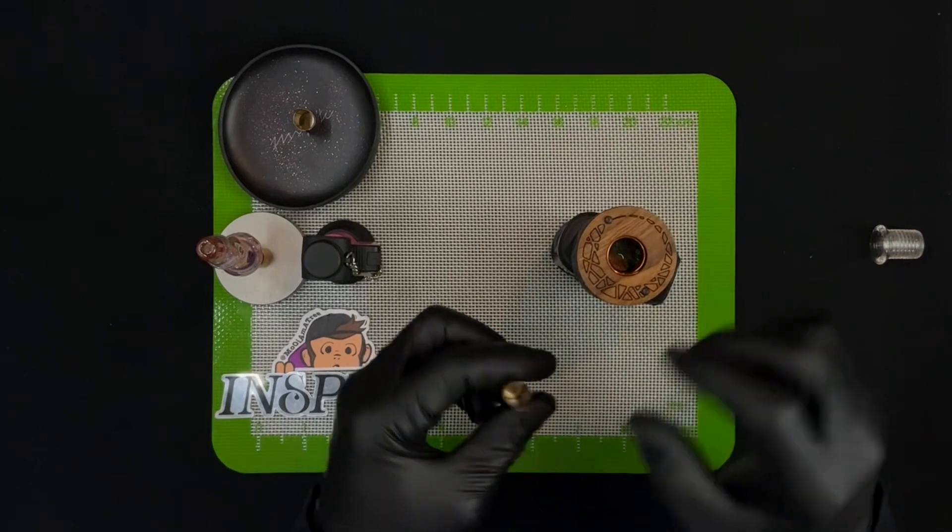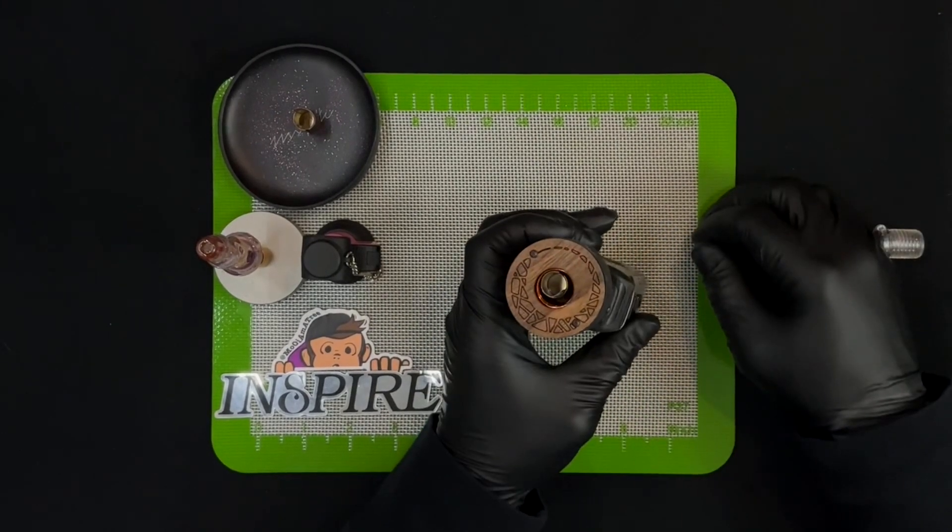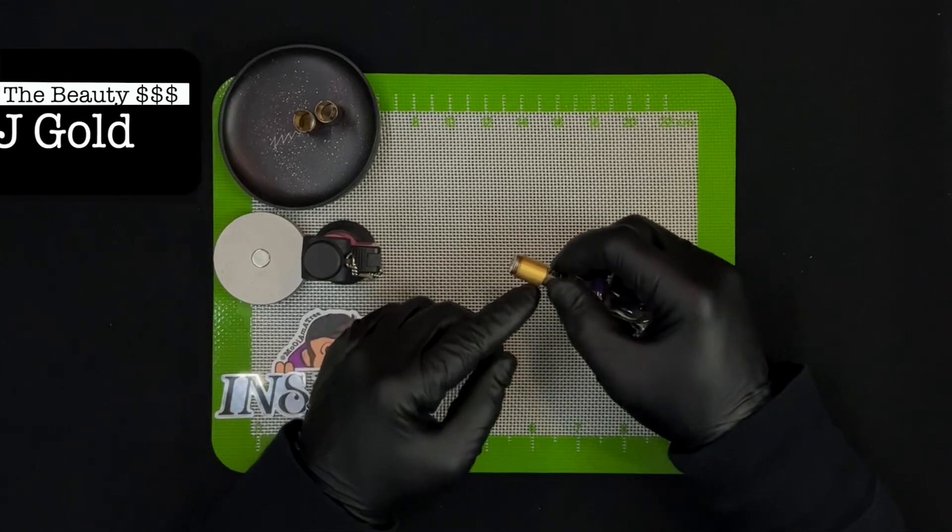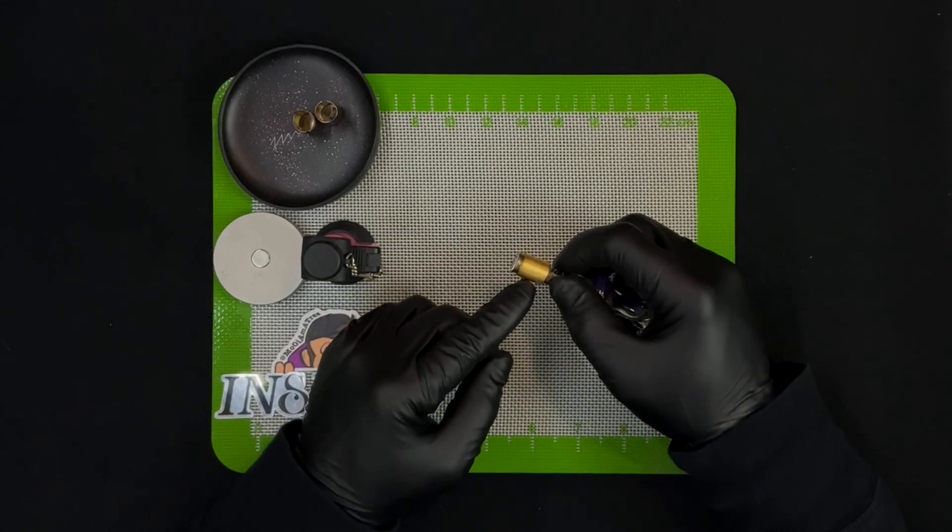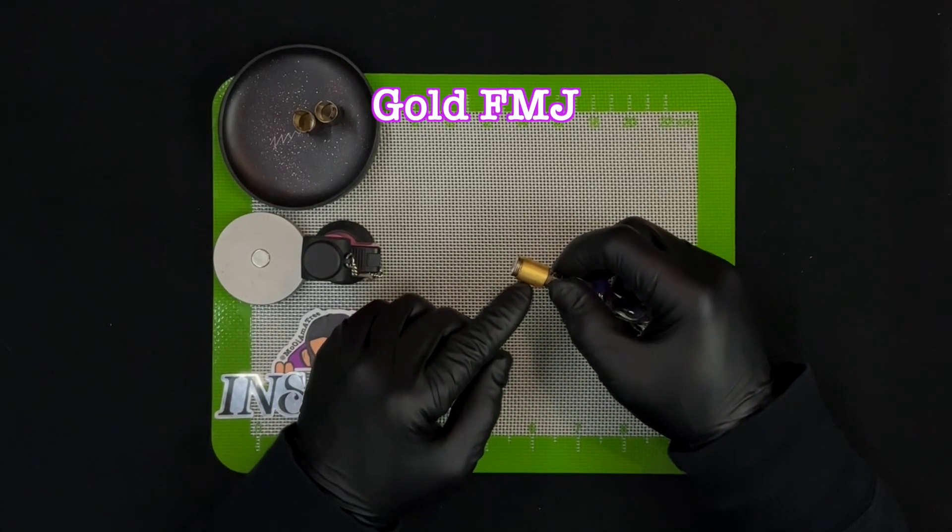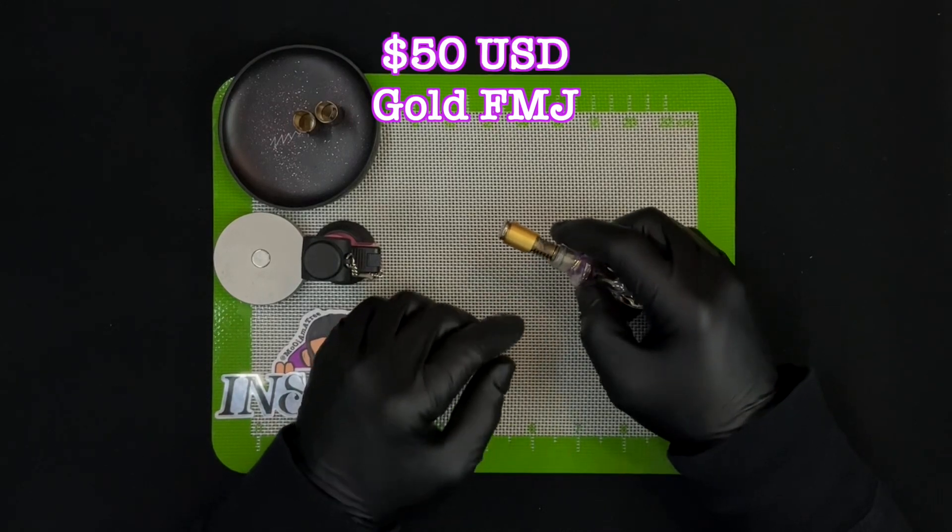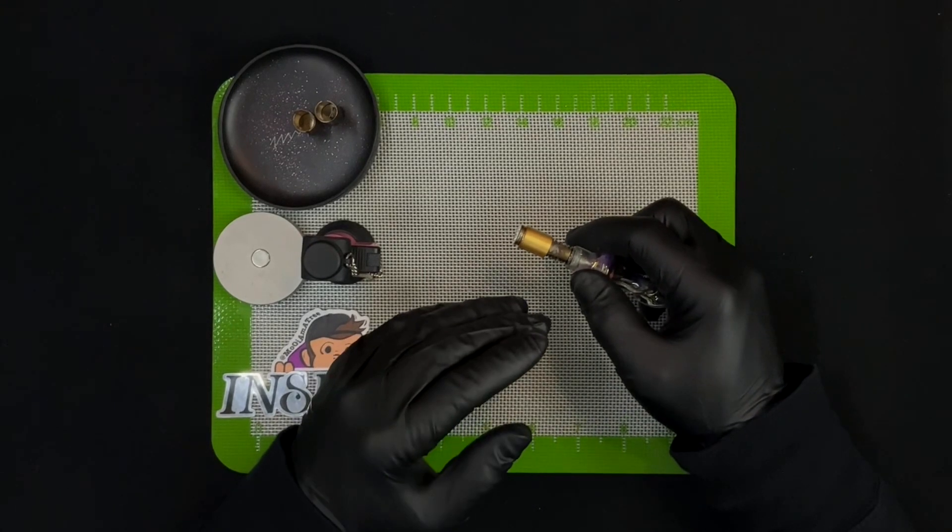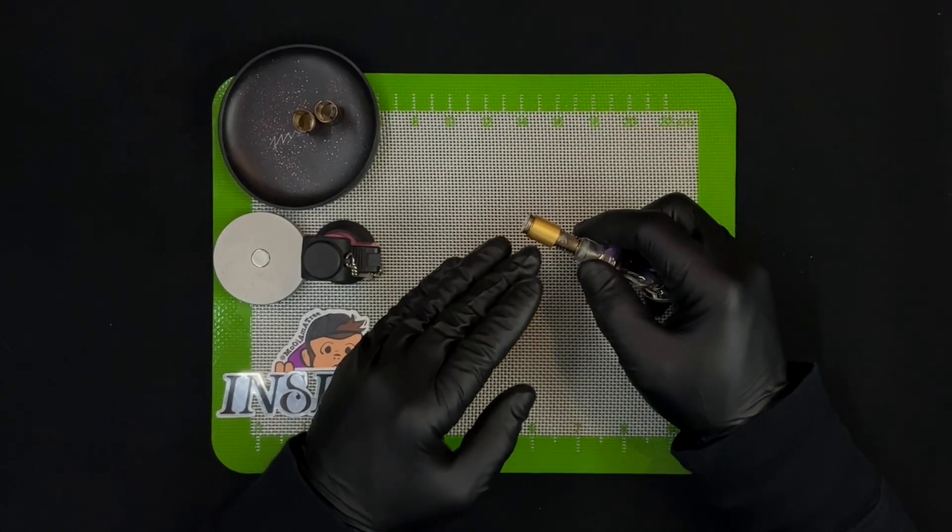Last up, the creme de la creme, the gold FMJ. This was the second FMJ that came out in the series and the priciest, clocking in at 50 dollars. The gold FMJ really is about aesthetics, well kind of. It actually is also about heat transfer.